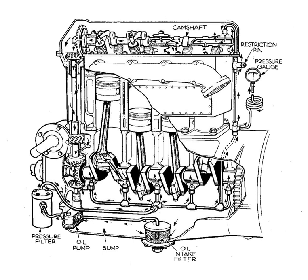Some engines, such as the Fiat twin cam engine of 1964, began as OHV engines with an oil pump driven from a conventional camshaft in the cylinder block. When the twin overhead cam engine was developed, the previous oil pump arrangement was retained and the camshaft became a shortened stub shaft. Even when the distributor position was moved from the block to the cylinder head camshafts, the oil pump drive remained in the same position, the unused distributor position now covered by a blanking plate. Small engines or scooters may have internal gear pumps mounted directly on their crankshaft.